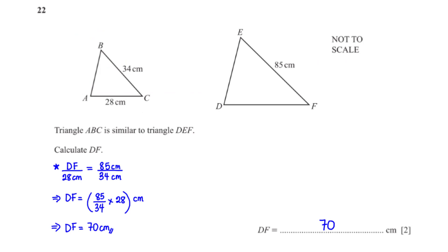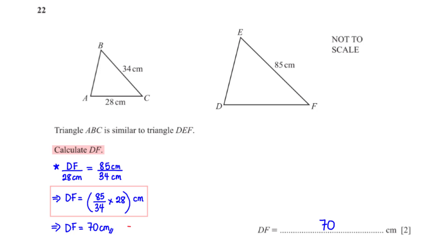Triangle ABC is similar to triangle DEF. Calculate DF. For similar shapes the ratio of corresponding sides is equal: DF/28 = 85/34. Solving for DF gives 70 centimeters.